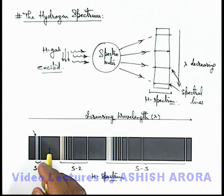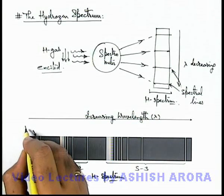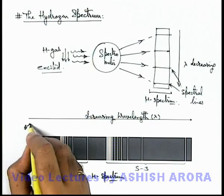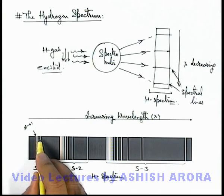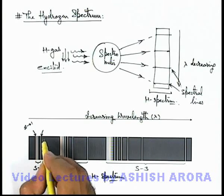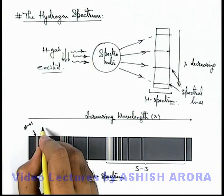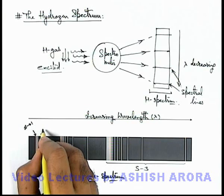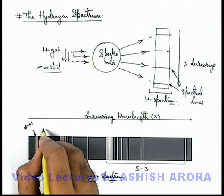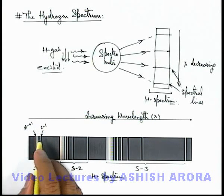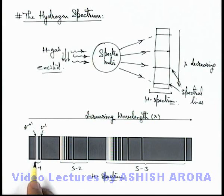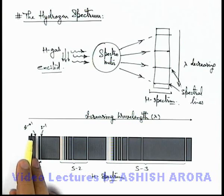This leftmost line corresponds to the last line of the Lyman series, that is corresponding to the transition from infinity to n=1. Adjoining it there are many different lines, and this is the line corresponding to the spectral series in which the transition of the electron is taking place from 2 to 1. The term spectral series is given for the group of lines corresponding to the transition from any higher orbit to n=1.